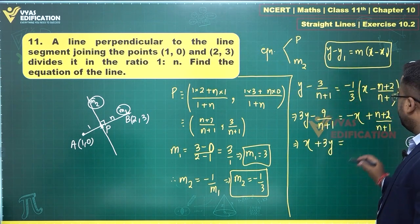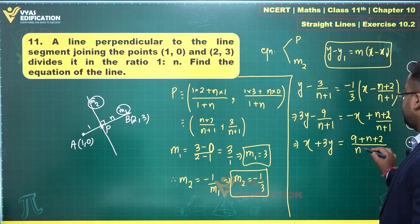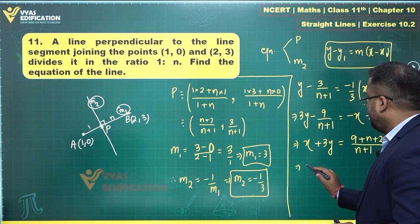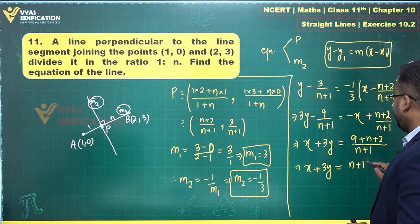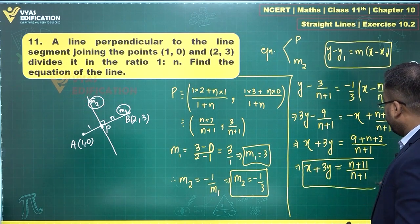Let's bring this term over there: 9 plus n plus 2 upon n plus 1, taking n plus 1 as the LCM. x plus 3y is equal to (n+11)/(n+1). This is what I get.